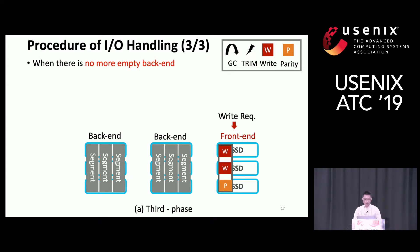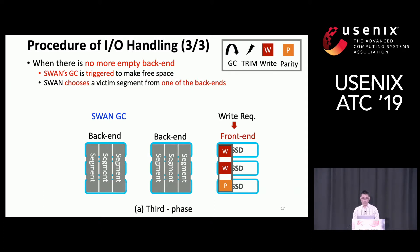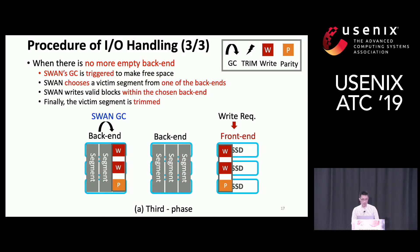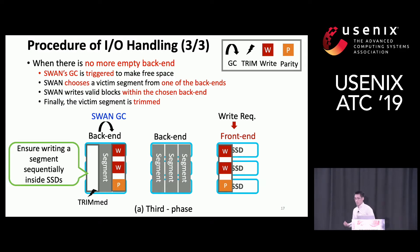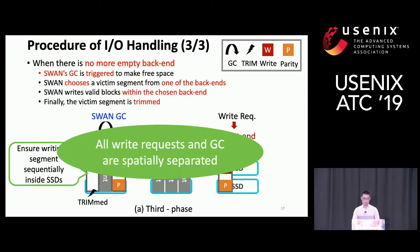When there are no more empty back-ends, SWAN's garbage collection is triggered to make free space. SWAN chooses a victim segment from one of the back-ends, writes the valid blocks within the chosen back-end, and finally the victim segment is trimmed. The trim command is important for SWAN because it ensures writing a segment sequentially inside the SSD. This way, all write requests and garbage collection IOs are separated.